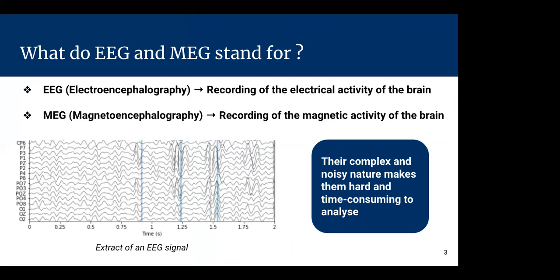You may wonder what EEG and MEG stand for. EEG is electroencephalography — the recording of the electrical activity of the brain — while MEG stands for magnetoencephalography, the recording of the magnetic activity of the brain. As you can see here, an extract of an EEG signal. Due to their complex and noisy nature, it's hard and time-consuming for epileptologists to analyze them. This is what motivates this project.